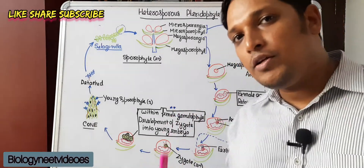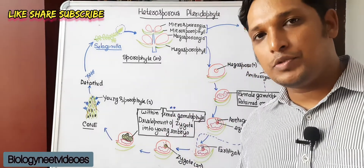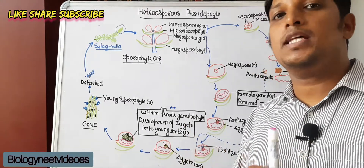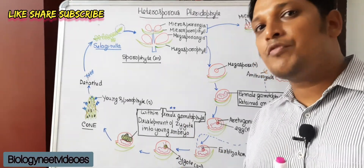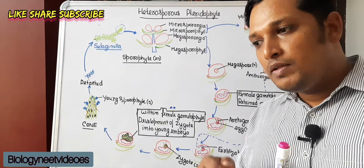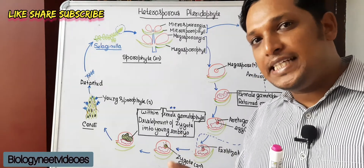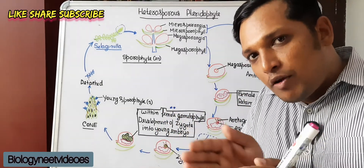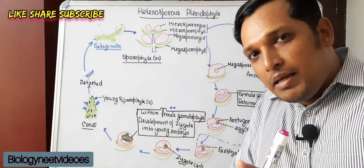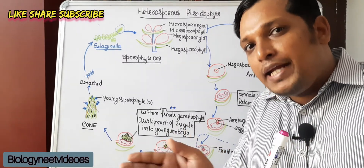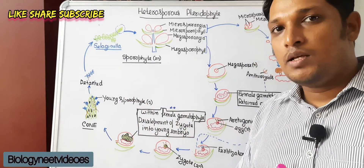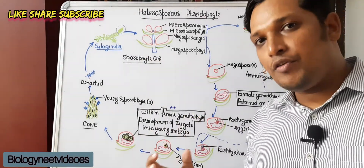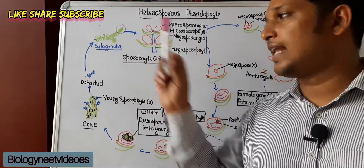Most pteridophytes are homosporous, which means they produce spores of a similar type. But during the course of evolution, there were about eight genera of pteridophytes which separated themselves from the homosporous nature and became heterosporous species. One such heterosporous pteridophyte species is Selaginella.